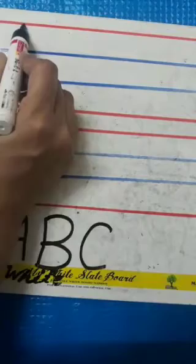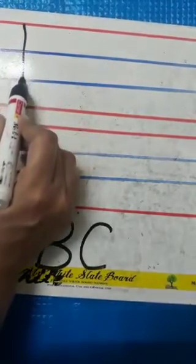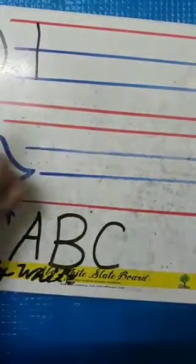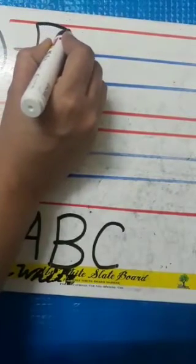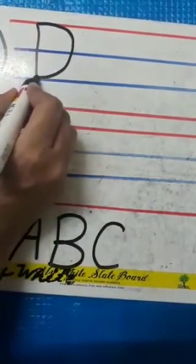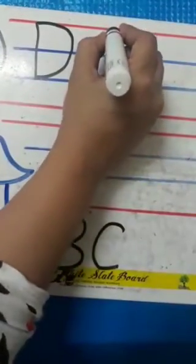We will start from this red line. We will make one standing line, red to blue, like this. And then we will make one right curve, one left curve. D - standing line red to blue, then one left curve.